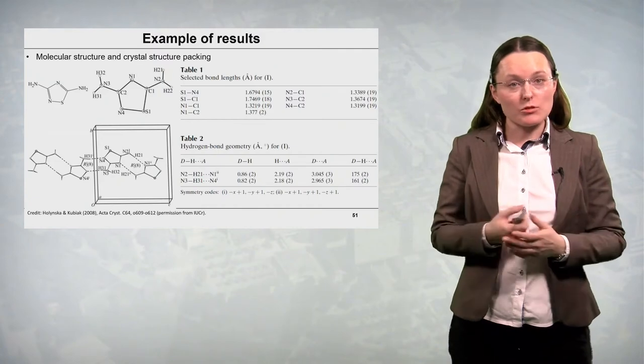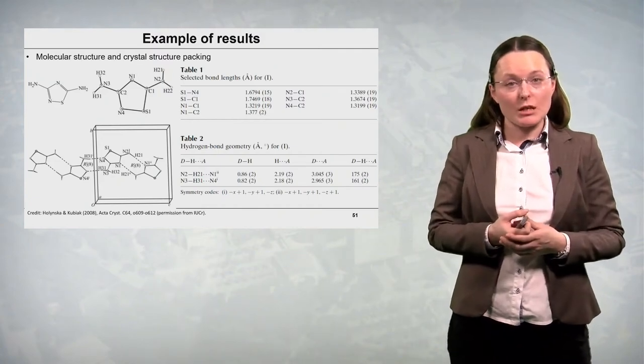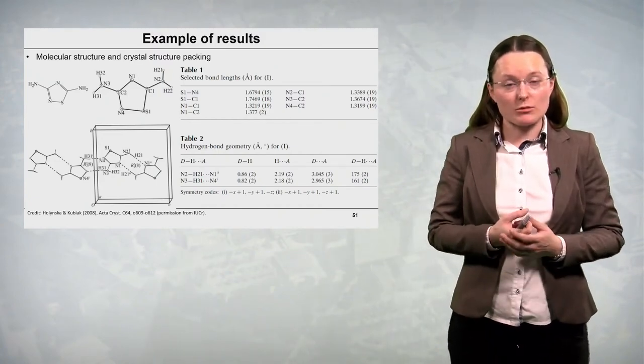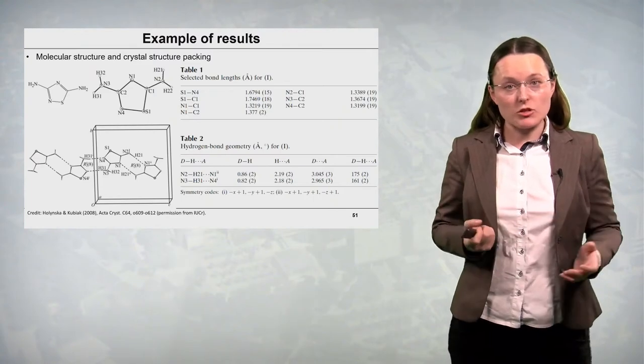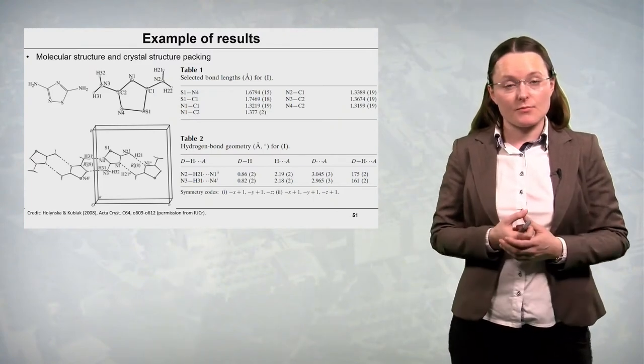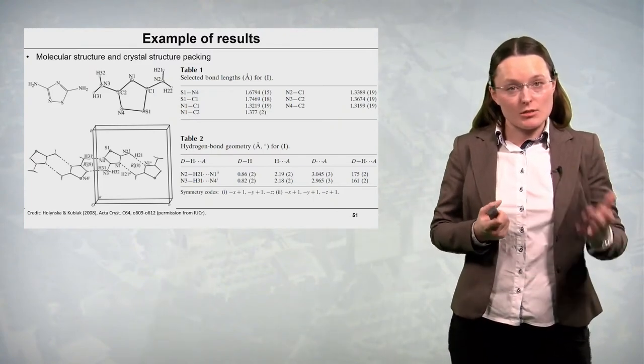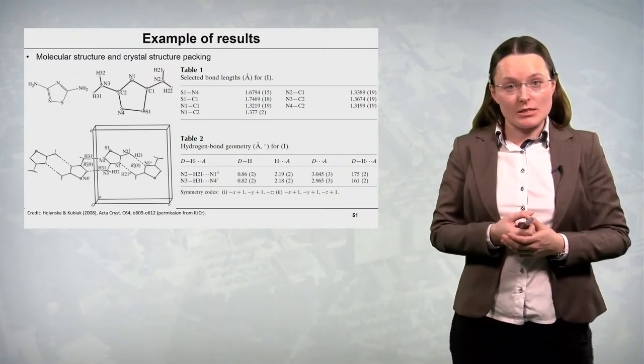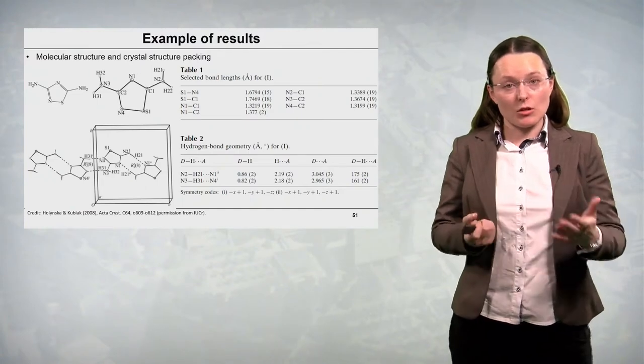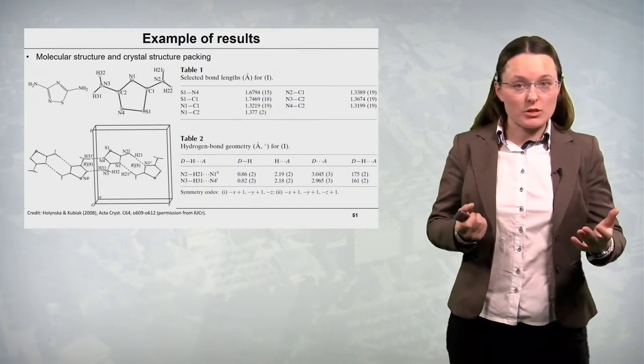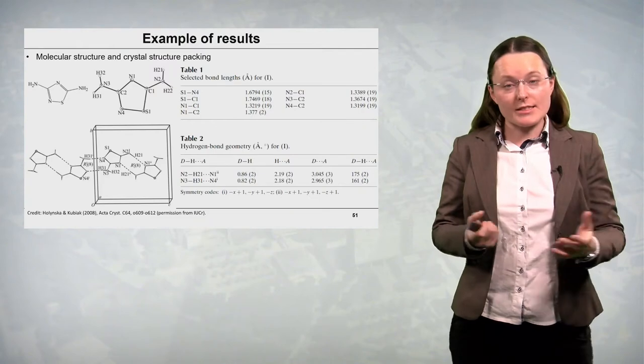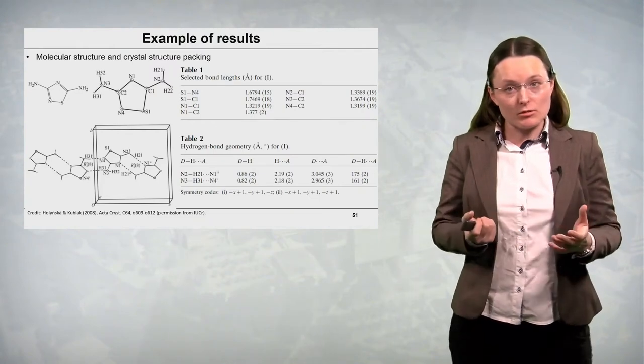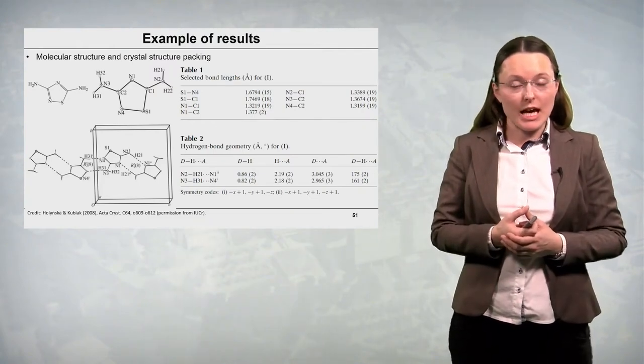And in the table next to this plot we have parameters of the hydrogen bonding quoted in angstroms and in degrees. There is a sort of hydrogen bond, donor hydrogen acceptor, there is the length, donor hydrogen, hydrogen acceptor, donor acceptor and the angle, donor hydrogen acceptor.